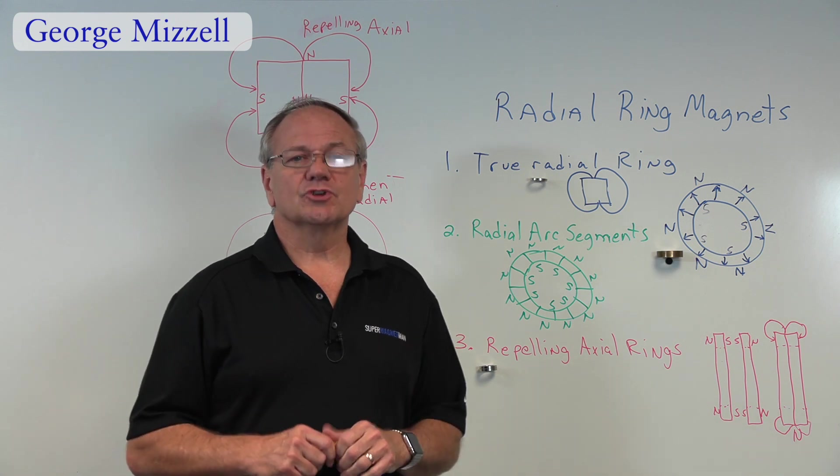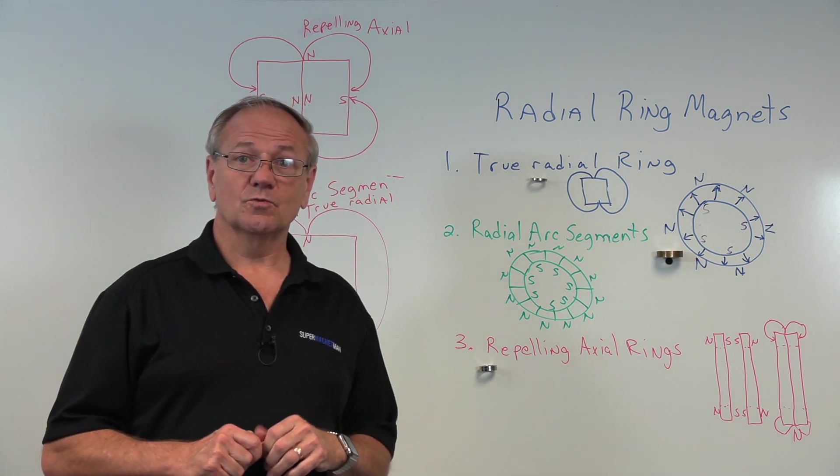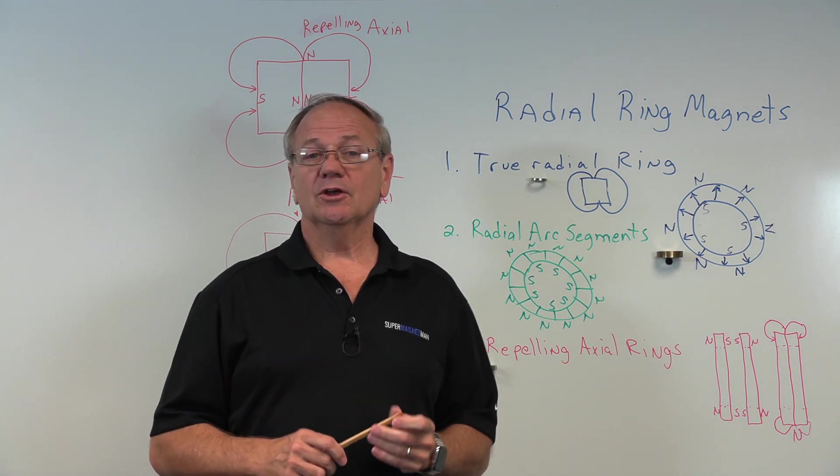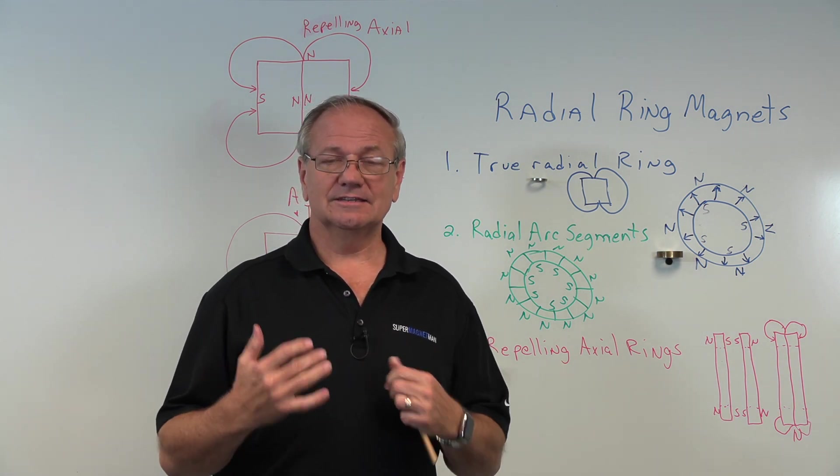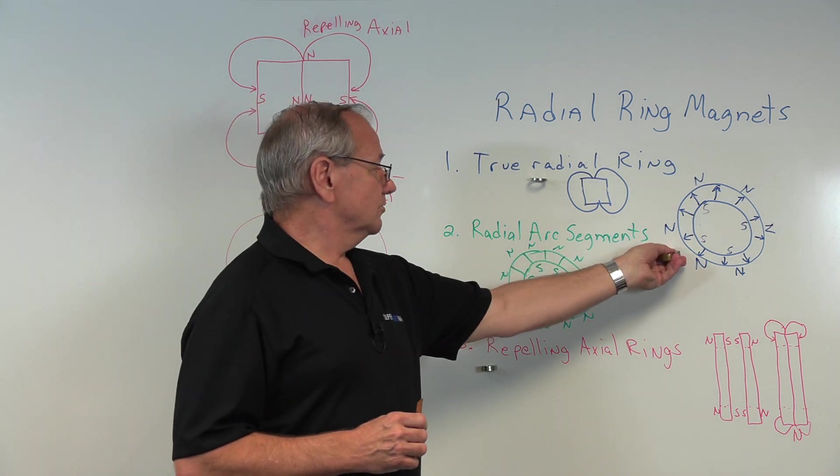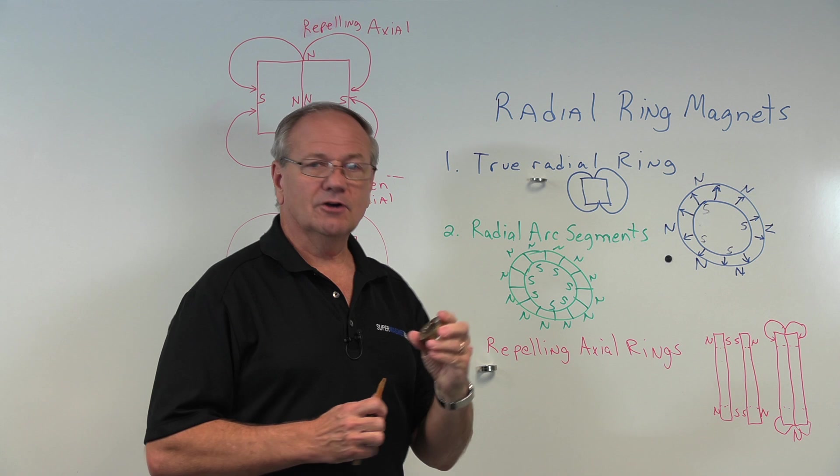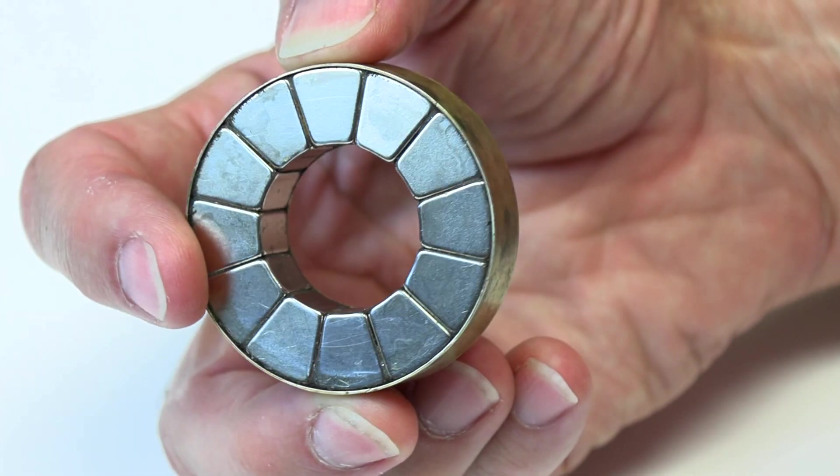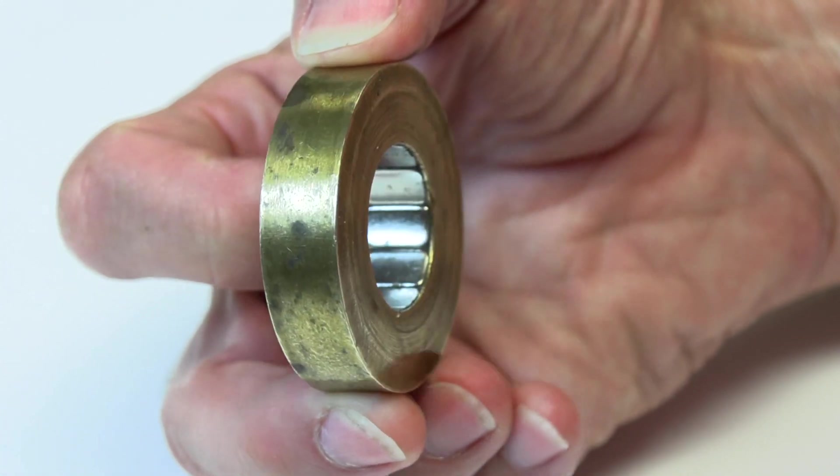About 20 years ago, we first started getting requests for radial ring magnets, especially out of neodymium. Well, at that time, we couldn't find any that existed. So we came up with the idea of making our radial arc segments. I talked with the factory, and we got them to make these with arc segments. They've been making them for us for the last 20 years.